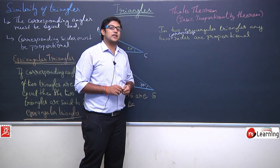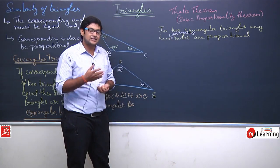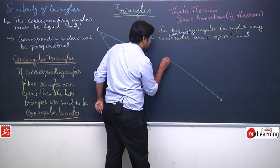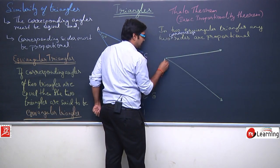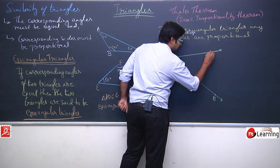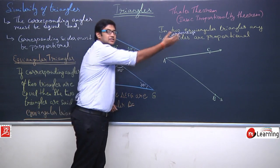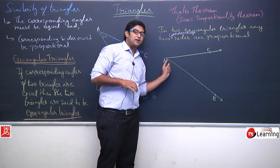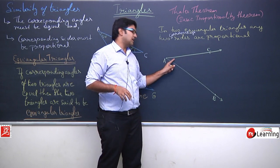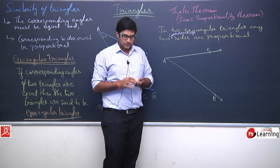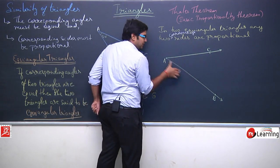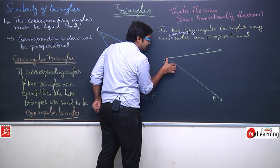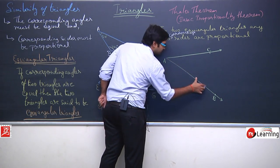How did he observe this? Let us understand. What Thales did was draw an angle — let us say points A, B, and C forming angle CAB. In this angle, A-C and A-B are the two arms. On one of these arms, say A-B, he marked points at equal distances from each other — let us say points P, Q, R, S up to B.